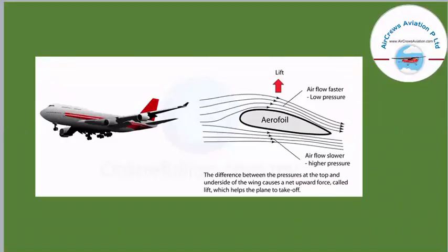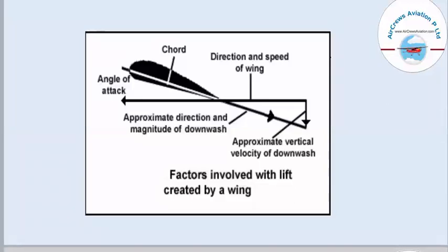The difference between the pressures at the top and the underside causes a net upward force called lift, which helps the plane to take off. This picture shows the factors involved with the lift created by a wing. Here we can see an airfoil section — the cord line joins the leading edge to the trailing edge. The angle created by the cord line and the direction of flight is known as the angle of attack. Just behind the airfoil wing we have the approximate vertical velocity of downwash. These are the basic factors involved with lift created by a wing.